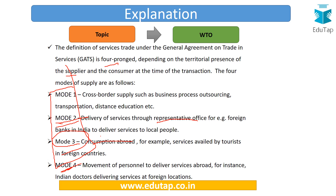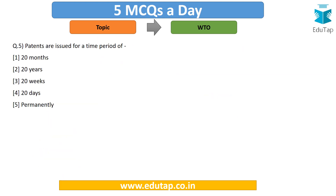Mode 4 is the movement of personnel to deliver services abroad — for example, Indian doctors traveling abroad and delivering services at foreign locations. You must remember all these modes and understand the differences between them. This is very important.